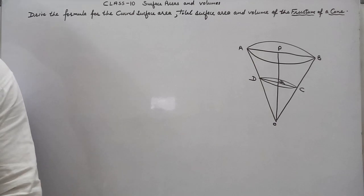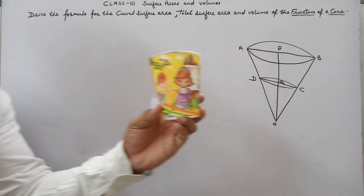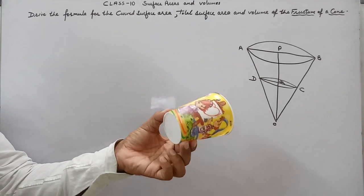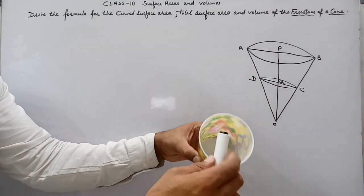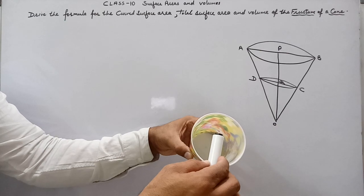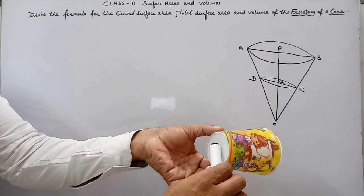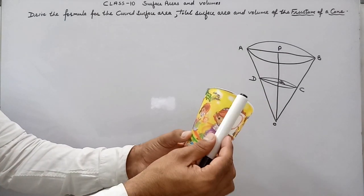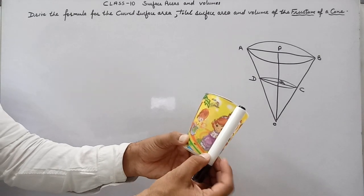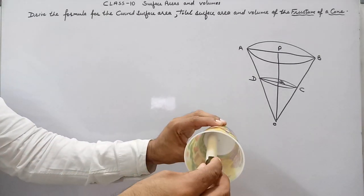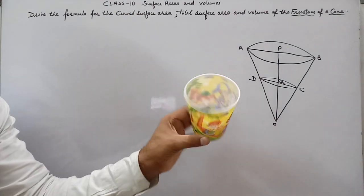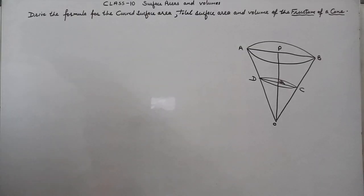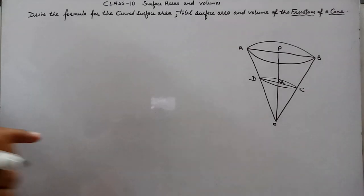The exact shape of a frustum looks like a tumbler. We have two radii: the upper base radius and the lower base radius. The slant height goes from the edge of one base to the other, and h is the height of the frustum.